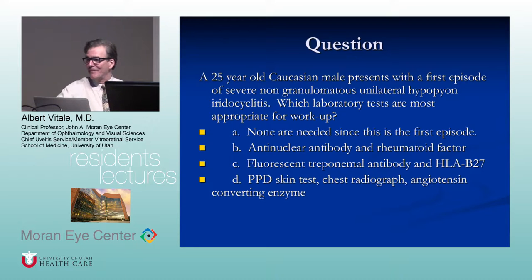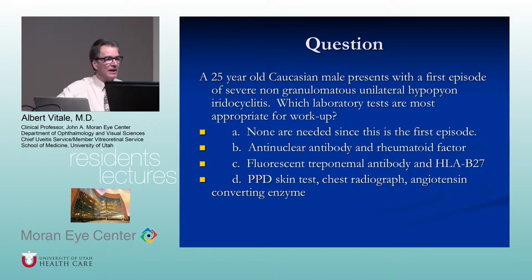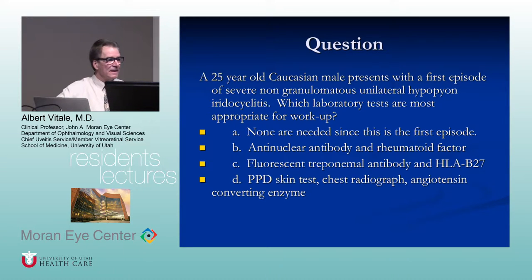Every patient with uveitis gets a serological test for syphilis. Why wouldn't ANA and rheumatoid factor be appropriate? You would test those in a child with chronic non-granulomatous anterior uveitis. JIA usually doesn't present with a hypopyon, and lupus usually doesn't produce uveitis at all.